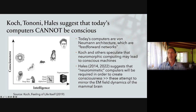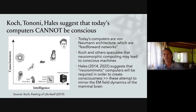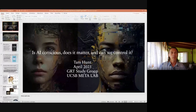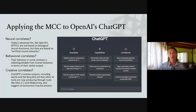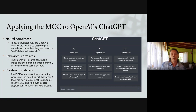Koch and others speculate that neuromorphic computing may eventually lead to conscious machines, but he is quite firm in his book that the current architecture is very unlikely to lead to conscious machines. Applying the MCC framework to ChatGPT as an example of today's advanced AI: ChatGPT is really quite incredible, and got significantly better with the GPT-4.0 engine incorporated about a month ago — going from a smart producer of English with GPT-3.5 to now being in the presenter's view equivalent to a very smart graduate student in terms of ability to have debates about deep topics.